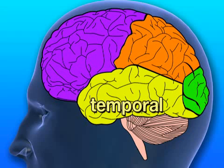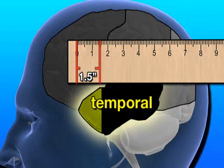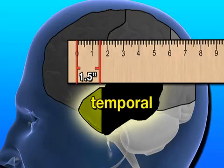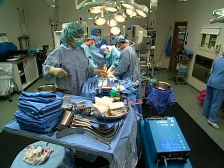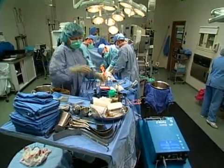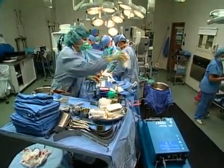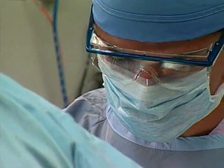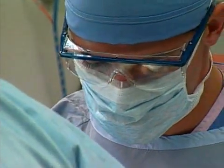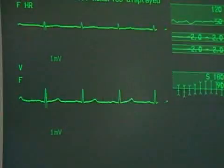Access to the deep temporal lobe can be achieved in two ways. The conventional approach involves removing an inch and a half from the tip of the temporal lobe to provide access to those deeper areas. The second involves cutting into the outer brain and opening a window from the side. However it is accessed, the hippocampus, amygdala, and surrounding brain are removed by a combination of cutting and suction, since brain tissue is soft.